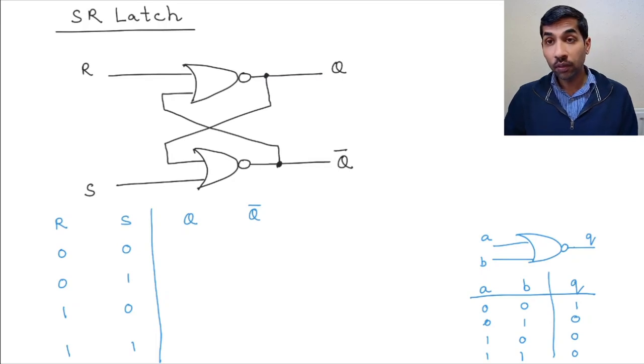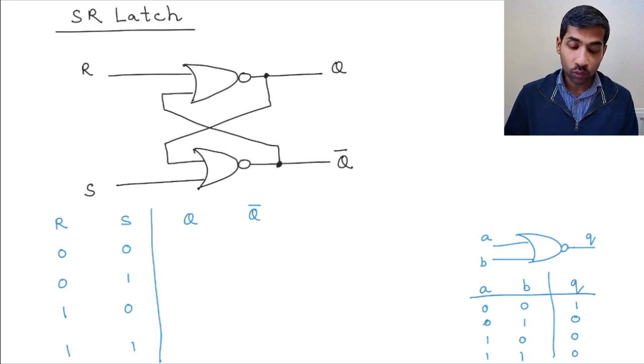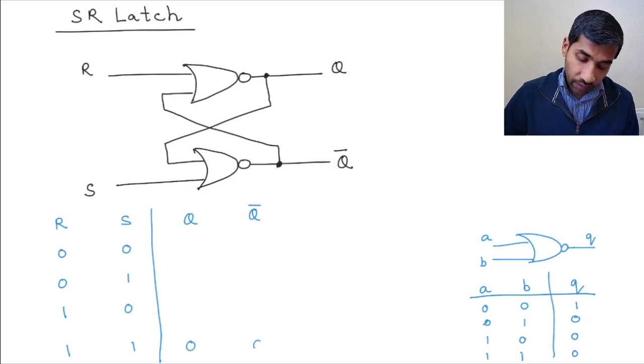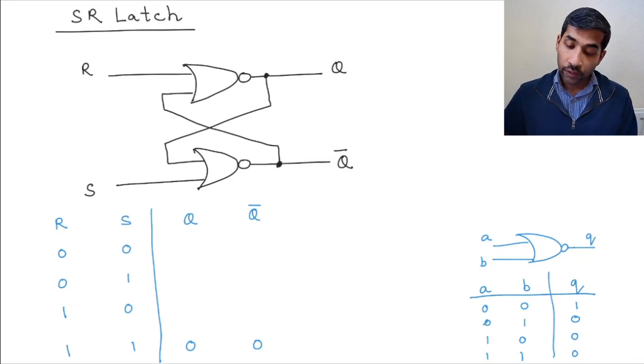Now we know that if any one of the inputs to the NOR gate is 1, the output is going to be 0, right? So if that's the case, then what will be the output when R equal to 1 and S equal to 1? That is, both the NOR gates have at least one input which is equal to 1. What is the output then? Q is 0 and Q bar is also 0, so 0 and 0.